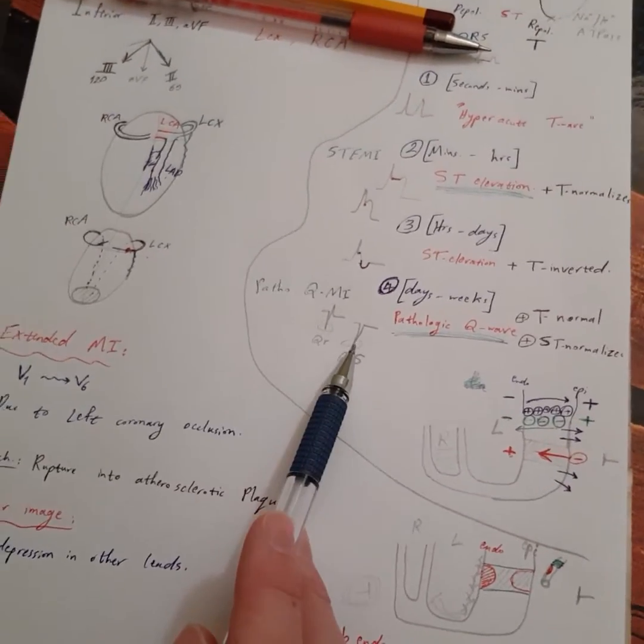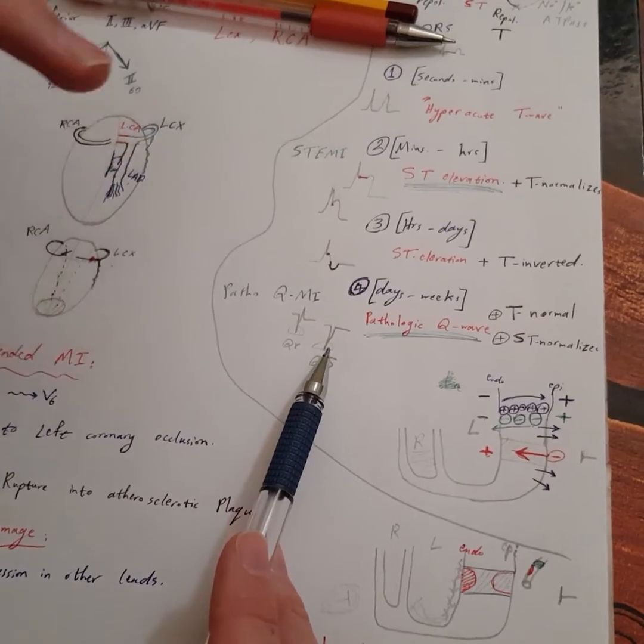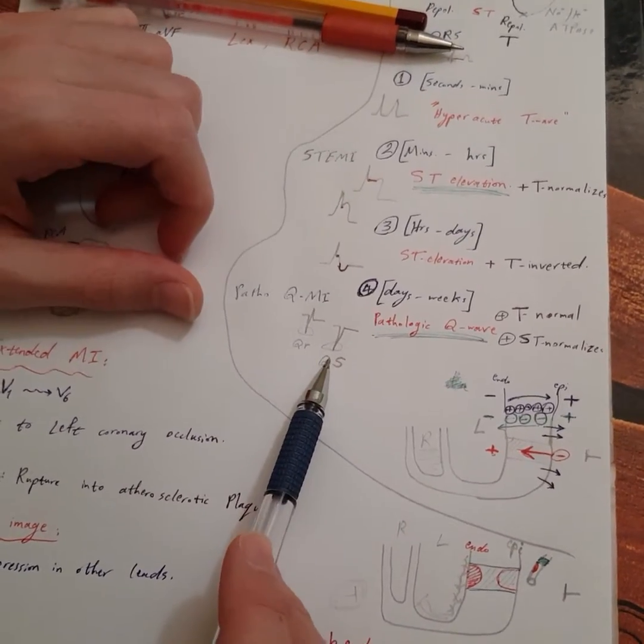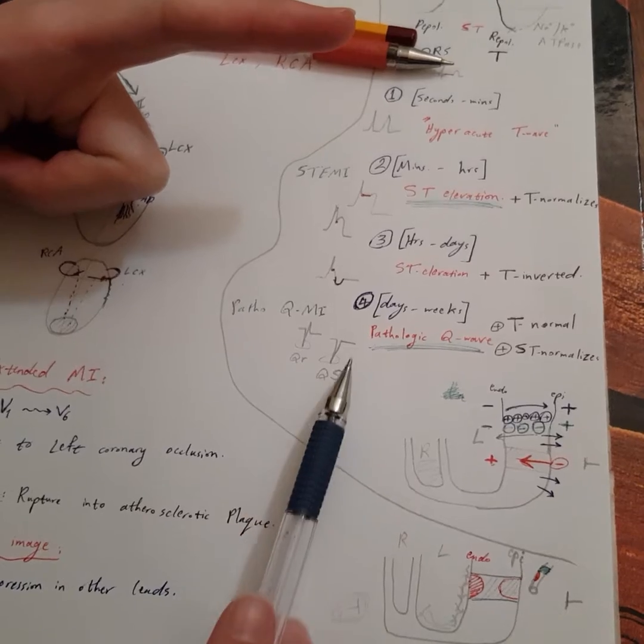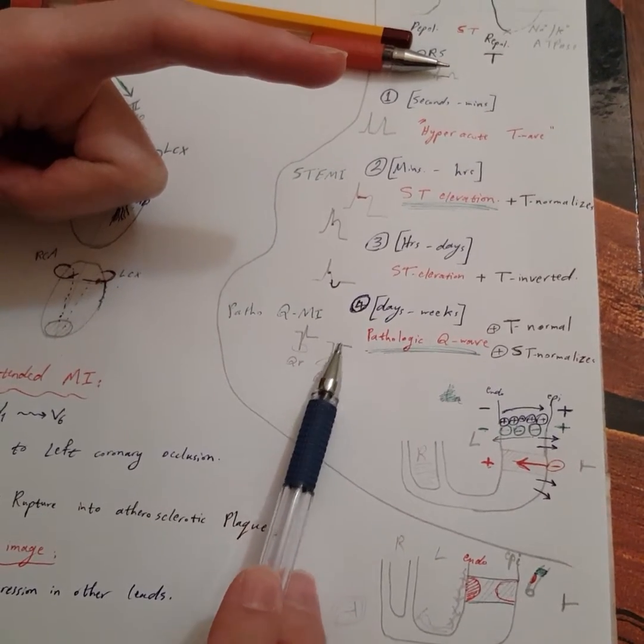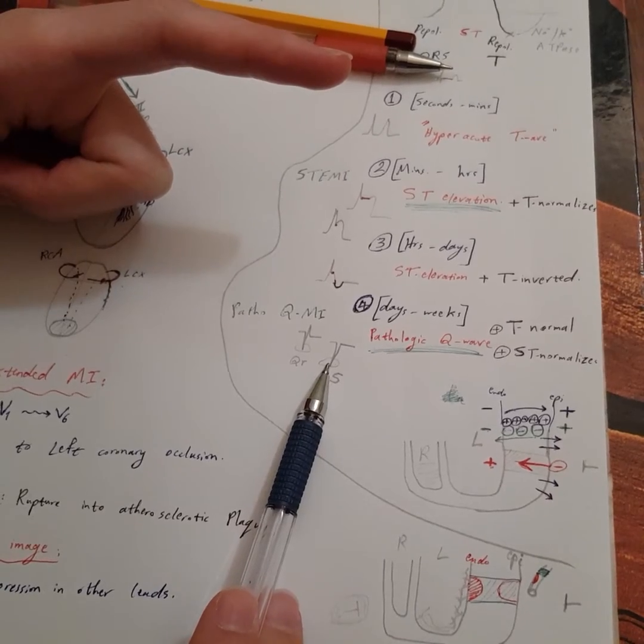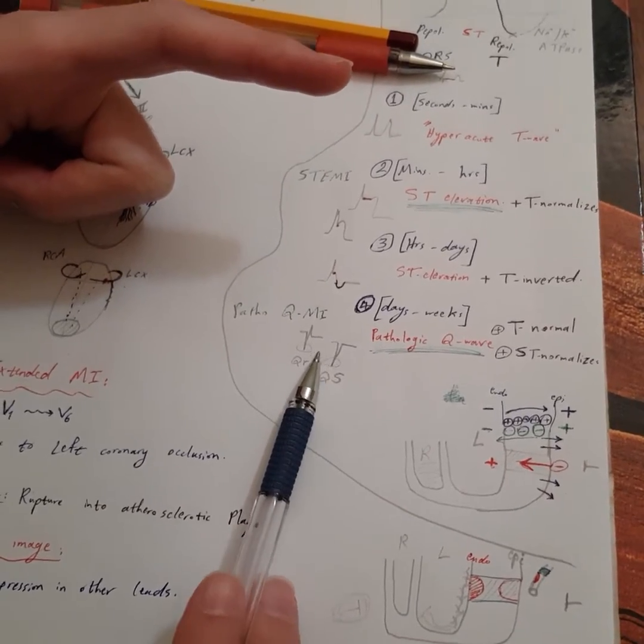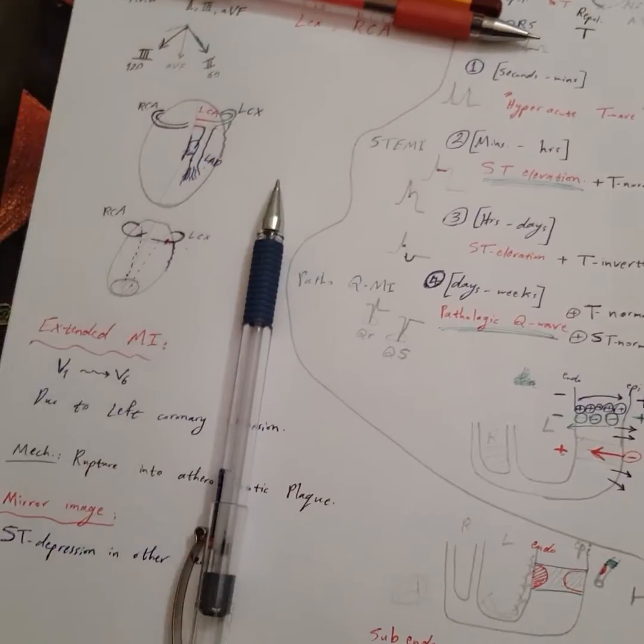So you have to see a pattern in more than one lead that gives you the same info—that there's an infarction here, here, and here. This is one thing. The other one is that this might be seen normally in AVR. If you remember, AVR was the